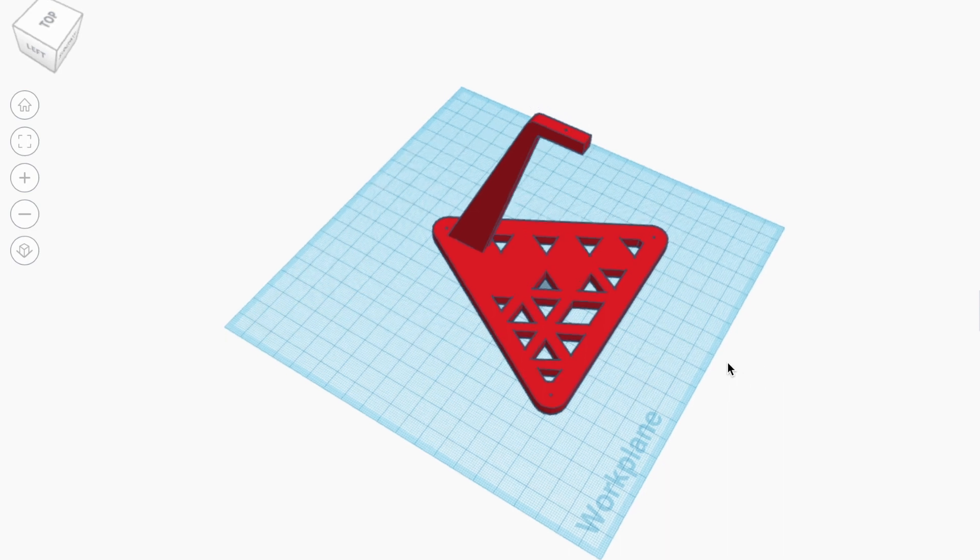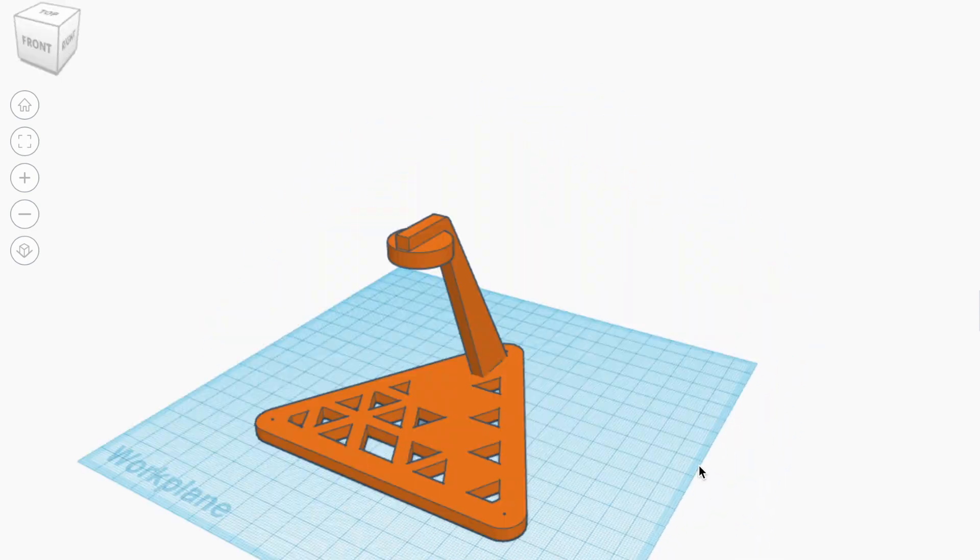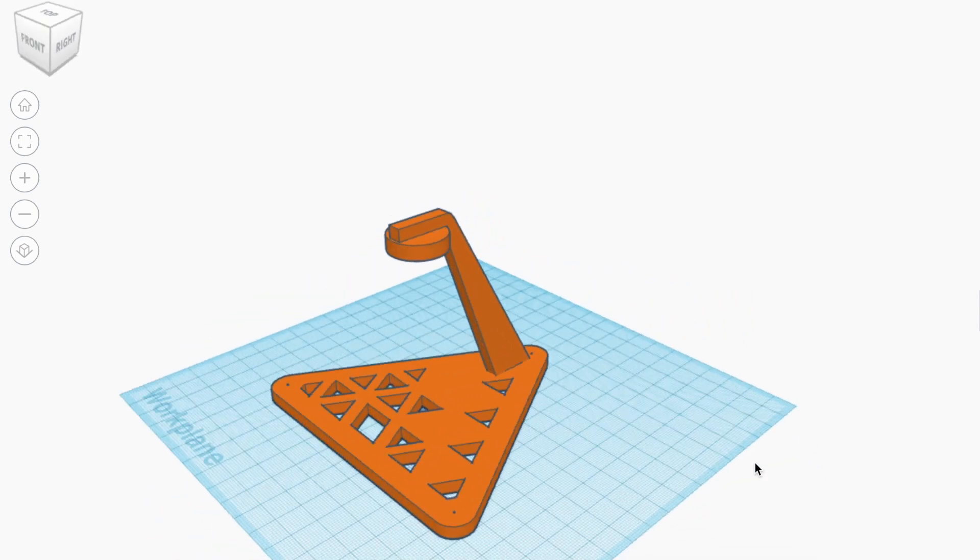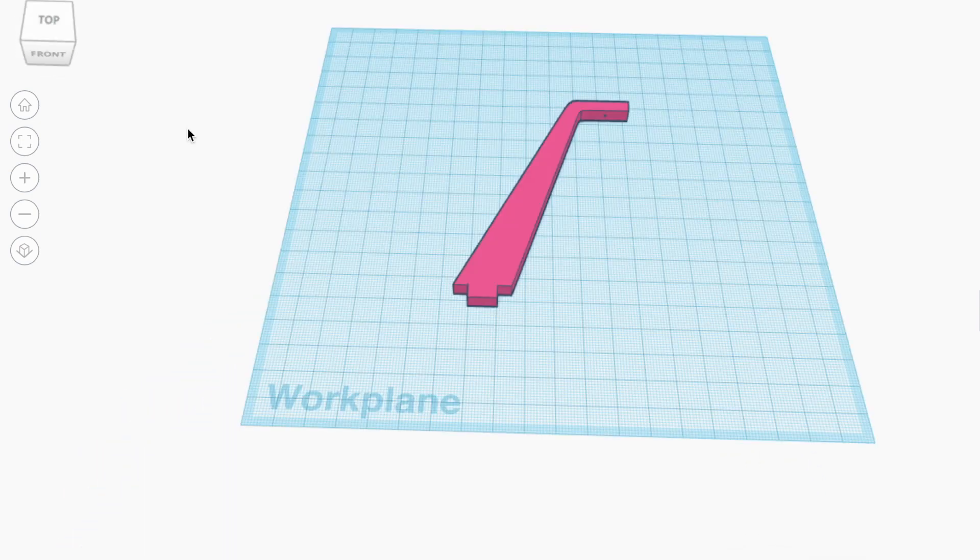For each version there are two print options. One which is a print in place model which requires some support structure to be printed to support the overhanging arm, and another which allows the table surface and arm to be printed separately and then glued together.